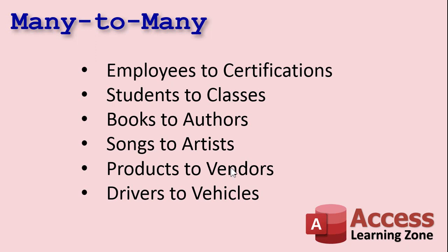Products to vendors: a minute ago I talked about manufacturers for cars — no one else makes a Ford Taurus — but if you're buying stuff from different vendors, like Amazon and Barnes & Noble and other bookstores, that book might be available from multiple vendors. Sometimes it's handy to keep a table where you get the pricing from each of your vendors so you can pick the lowest one. So each product can relate to multiple vendors, and each vendor will have multiple products.